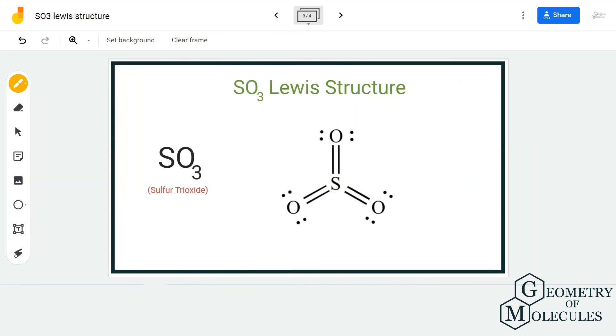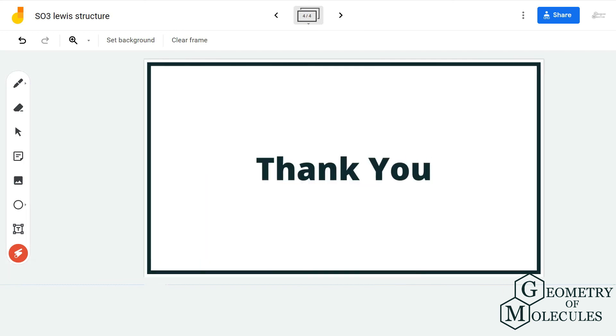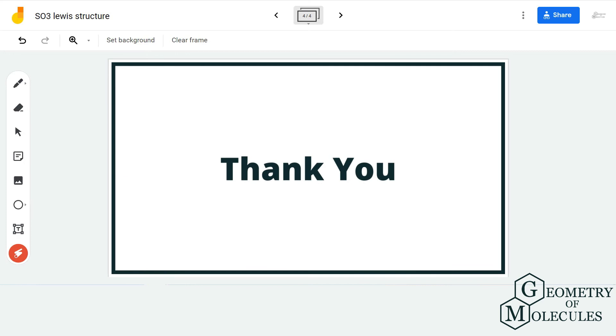So this is the Lewis structure of SO3, in which sulfur atom is forming three double bonds with three oxygen atoms. I hope this video helps you to understand the Lewis structure of SO3. For more such videos on Lewis structure, molecular geometry, and polarity of molecules, make sure to subscribe to our channel. Thank you for watching.